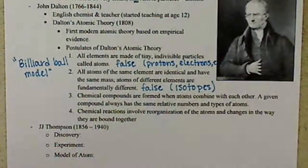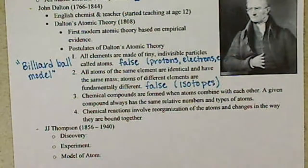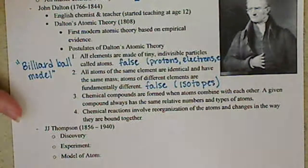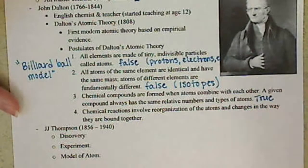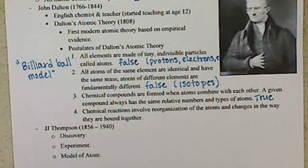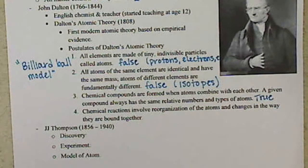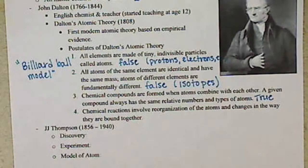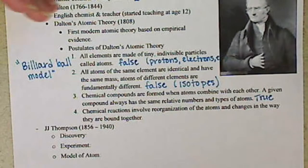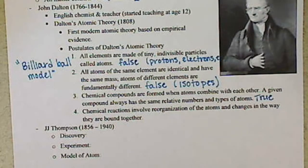The third postulate says that a chemical compound formed, that they are formed when atoms combine with each other. A given compound always has the same relative numbers and types of atoms. This is still true. And this is our general concept. Basically what he's saying is that our chemical compounds are basically what happens when we get a bunch of spheres, and we connect them together somehow. He's not saying how. He's just saying basically we put those spheres together. Now if we have the same ratio of spheres in the same order, then that is always the same chemical compound.